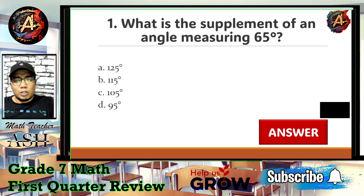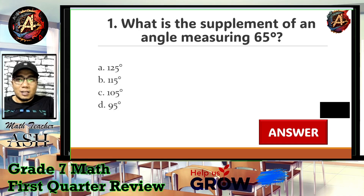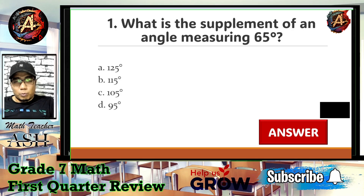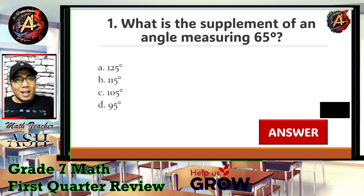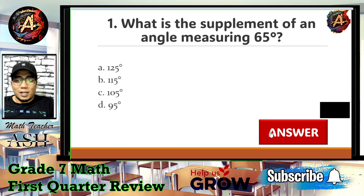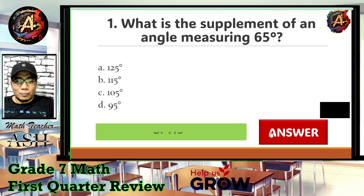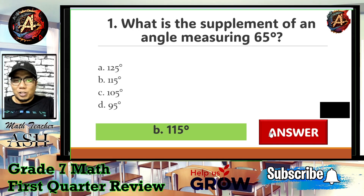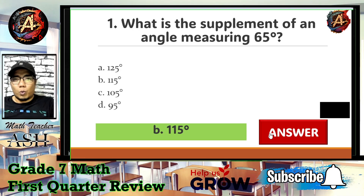If we are talking about supplementary angles, by definition it means that the two angles have a sum of 180 degrees. In this problem, one angle is given as 65 degrees. Ask yourself: what angle is needed for 65 to become 180 degrees? That is 115 degrees — letter B. Let's check whether we are correct. Very easy! Now let us go to question number two.